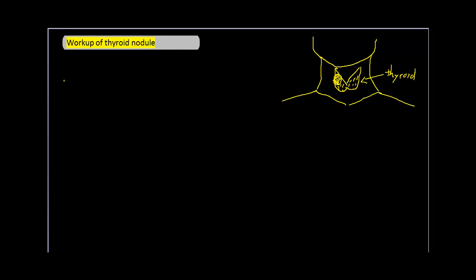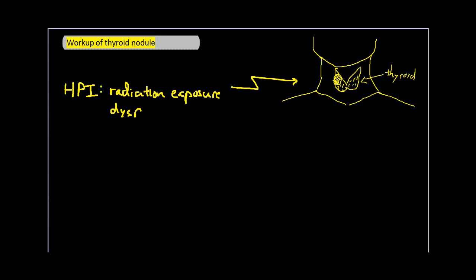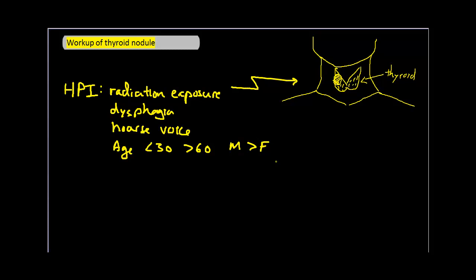Now let's start with the HPI. The HPI will not give you a definitive diagnosis in this situation, but it will help to separate out some of the causes on your differential. The most important risk factor for thyroid cancer is a history of radiation exposure to the neck. We also want to ask whether the patient has a history of dysphagia or a hoarse voice, and we might consider cancer higher on our list if the patient is at extremes of age — less than 30 or older than 60 — or is male. While more females present with thyroid nodules, a male presenting with one is at higher risk for it actually being cancerous.